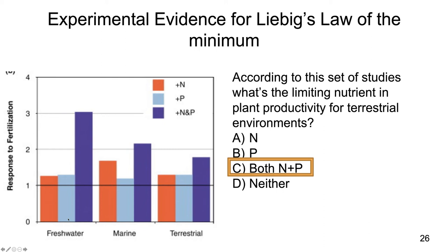This pattern is true across all different environments — freshwater, marine, and terrestrial. Nitrogen and phosphorus both play a role in increasing growth, but nitrogen and phosphorus together increase growth very dramatically. So both nitrogen and phosphorus are the limiting factors, and when we add them together we get a much greater increase in growth.